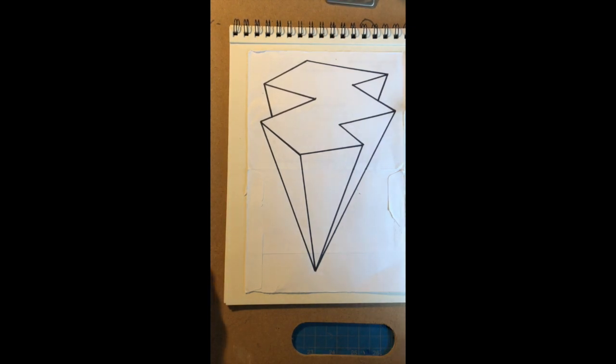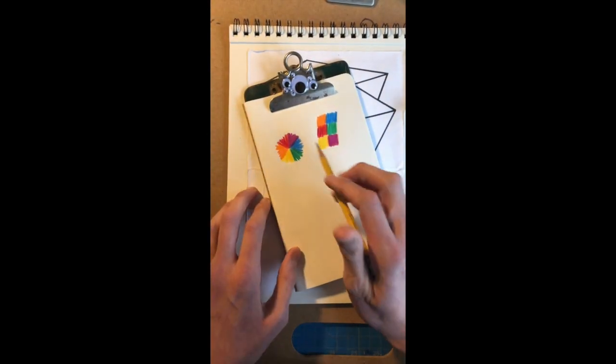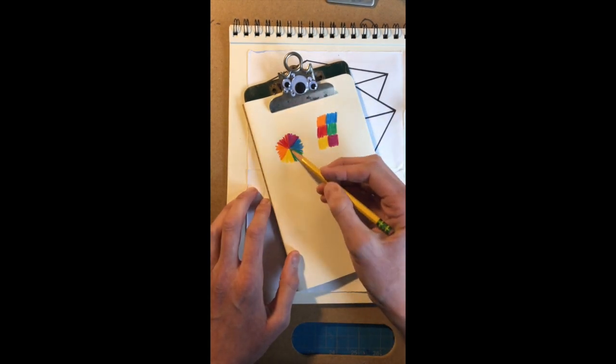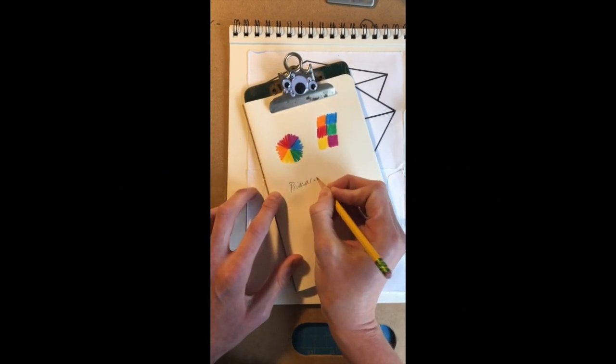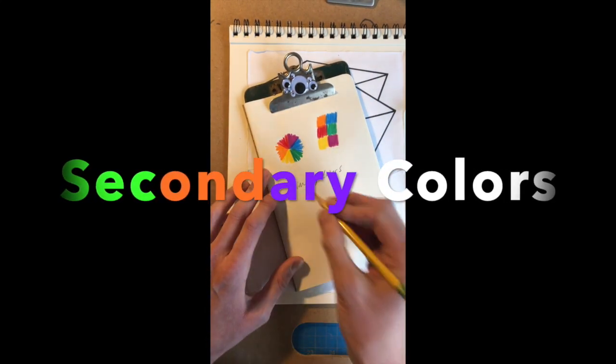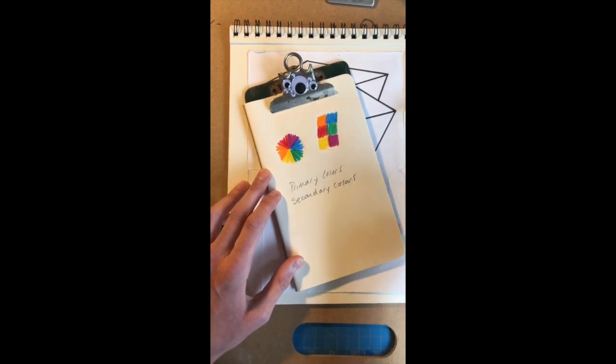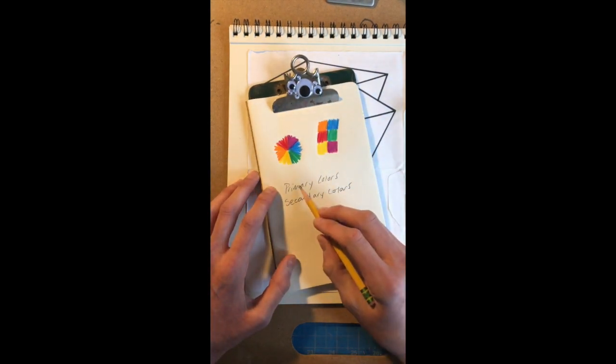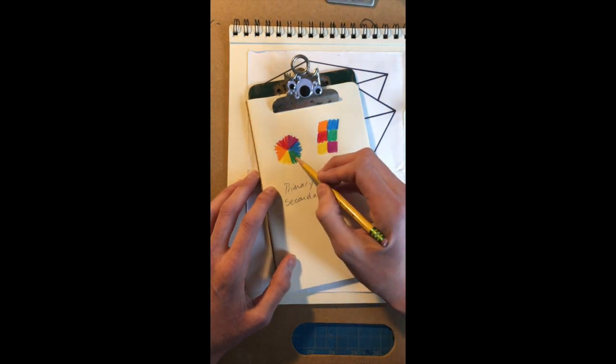We have several color sets and you'll want to pick a color set to add color to your shape. If we look at our clipboard here, we have our color wheel right here. One thing we already know is that red, yellow, and blue are our primary colors. And green, orange, and purple are our secondary colors. We know that we use our primary colors to create our secondary colors.